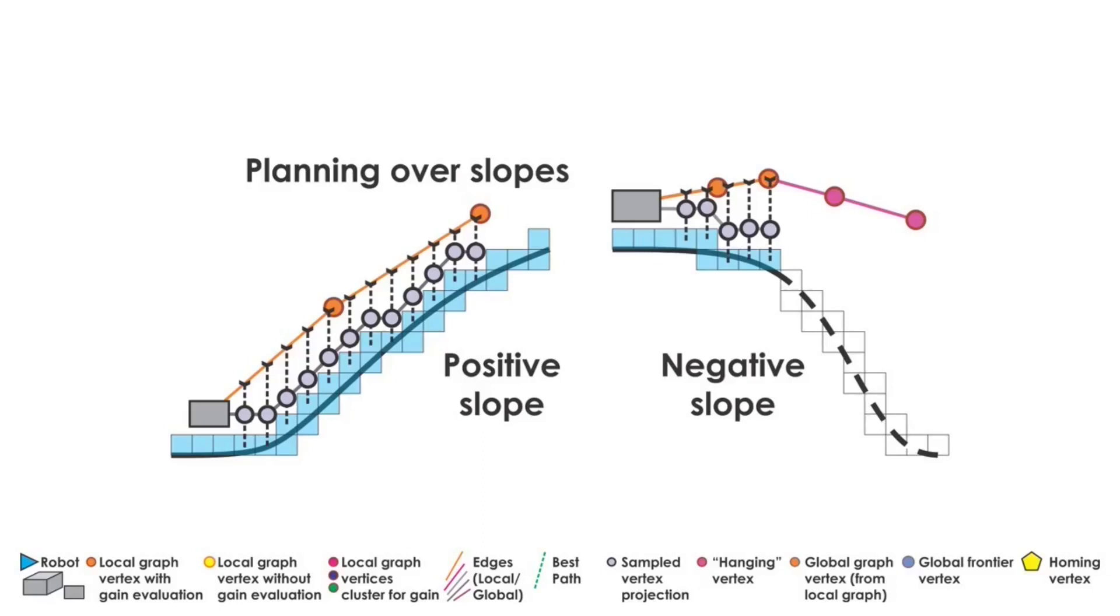These vertices are used for volumetric gain evaluation but the edges connected to them are not commanded to the robot to traverse. In this figure, the magenta-colored vertices are the hanging vertices. The volumetric gain associated with these vertices is also weighted to reduce its effect.